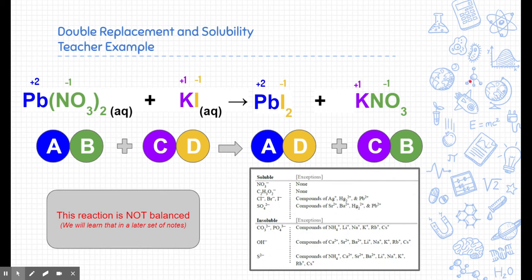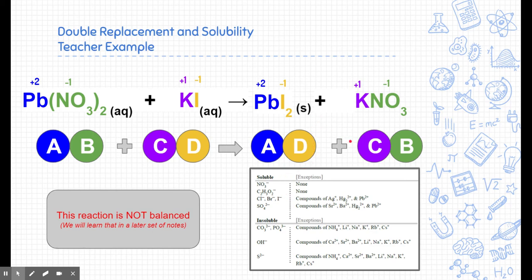Now I want to figure out whether these two products are soluble or insoluble using the solubility rules — this is the main point of these notes. For PbI₂: iodine is my negatively charged piece; the rules say it should be soluble, but checking exceptions, lead is listed as an exception when attached to iodine, making it insoluble — a solid precipitate. For KNO₃: nitrate is soluble with no exceptions, so that is aqueous. Since one product is insoluble, this reaction does form a precipitate.